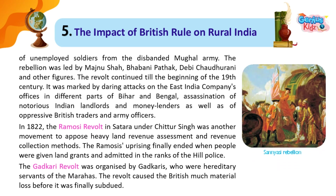The rebellion also included thousands of unemployed soldiers from the disbanded Mughal army. The rebellion was led by Majnu Shah, Bhabani Pathak, Devi Chaudhrani and other figures. The revolt continued till the beginning of the 19th century. It was marked by daring attacks on the East India Company's offices in different parts of Bihar and Bengal, assassination of notorious Indian landlords and moneylenders, as well as of oppressive British traders and army officers.